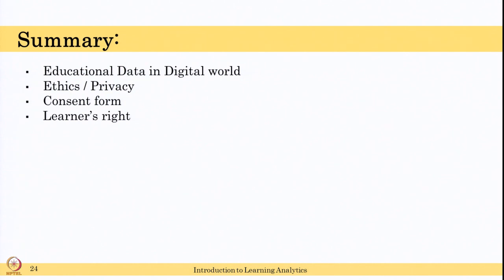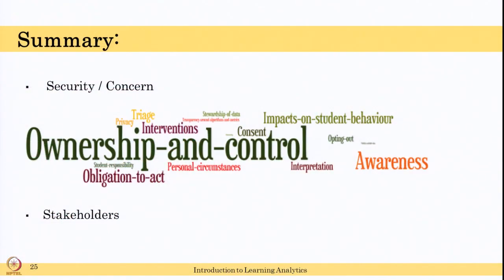This is from the referenced paper cited here. In this lecture, we talked about educational data in the digital world — what data is collected in digital and educational settings, from LMS to different sensors. We discussed ethics and privacy, how to secure data, and what ethical practices to follow when collecting data. We covered what a consent form is, what it should contain, how to obtain one, and how to handle consent for minors. We also discussed learner's rights — most importantly, that learners have the right to opt out of the study at any time. In summary, from the LAC 2016 paper, ownership and control are paramount: the learner has ownership and control of their own data.